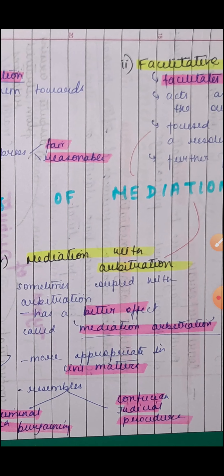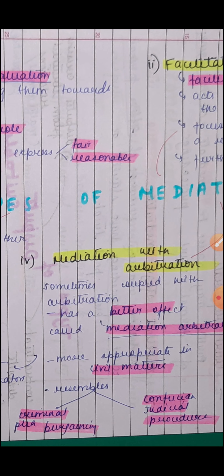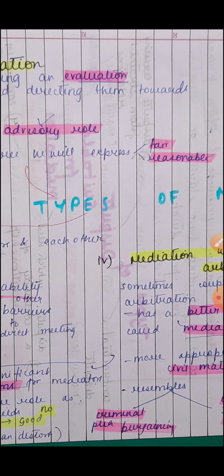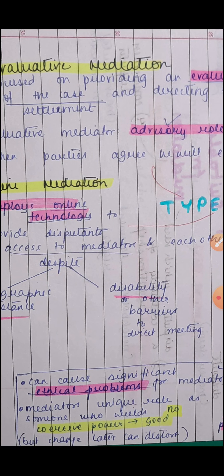Fourth, med-arb (mediation combined with arbitration) — when mediation is coupled with arbitration, the arbitral award is binding, making it more effective. It is more appropriate in civil matters and resembles criminal plea bargaining and Confucian judicial procedure. However, it can create significant ethical problems for the mediator, since mediators have no coercive power, and if this position changes, parties may become hostile.